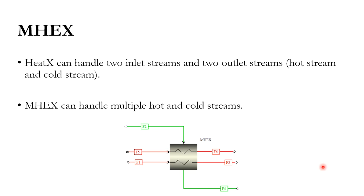If you come to the multi-stream heat exchanger, it can handle multiple hot and cold streams. As you can see in this diagram, the red lines show the hot streams and the green line shows the cold stream. There are two hot streams being sent to this multi-stream heat exchanger and there is only one cold stream.